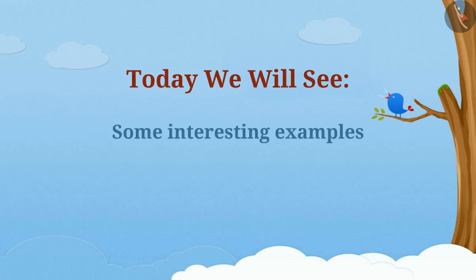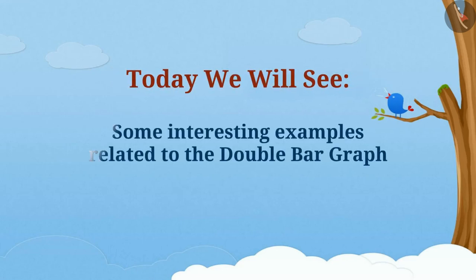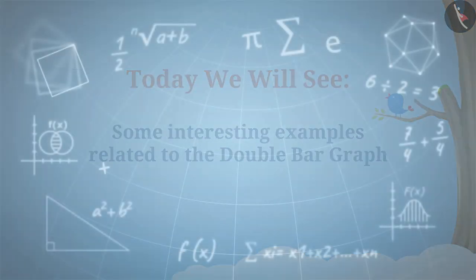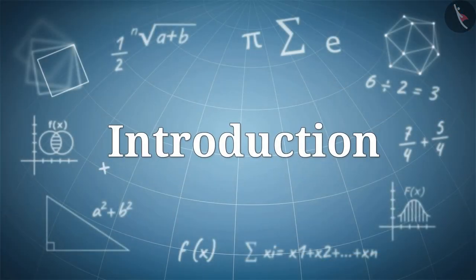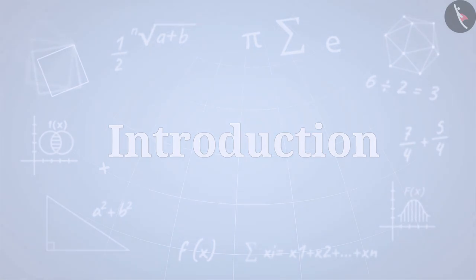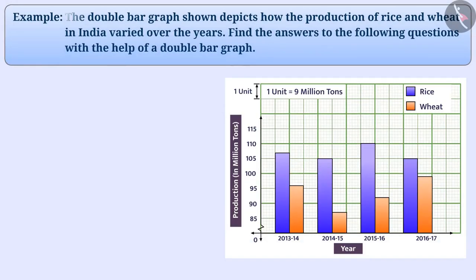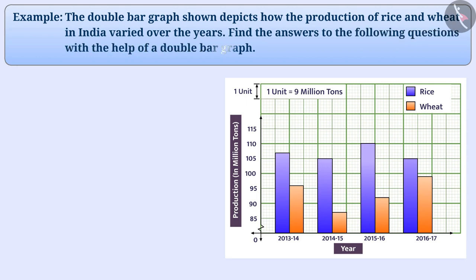Today, we will see some interesting examples related to double bar graph. The double bar graph shown depicts how the production of rice and wheat in India varied over the years. Find the answers to the following questions with the help of the double bar graph.